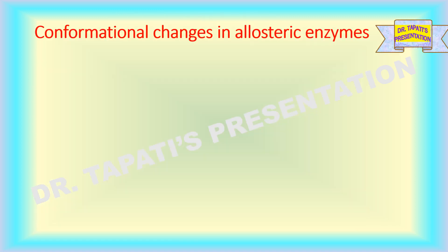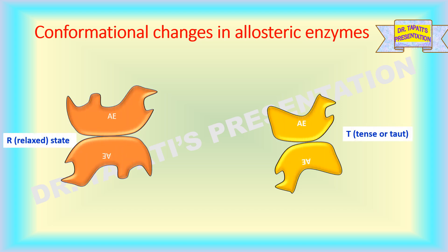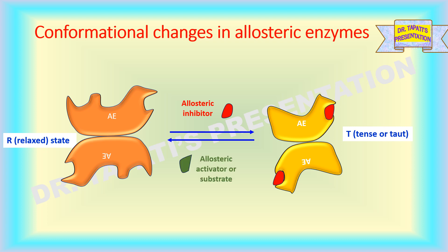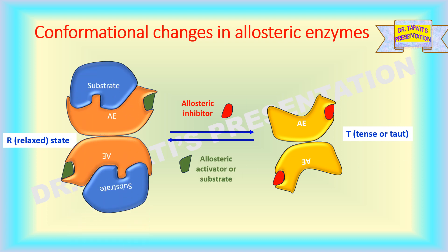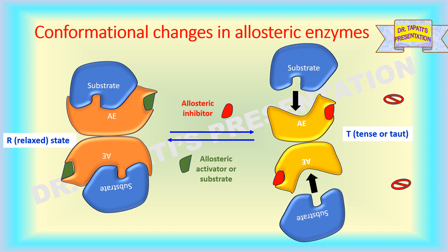Most of the allosteric enzymes are oligomeric in nature. The subunits are identical or different. They exist in two conformational states: R or relaxed state, and T or tense state. T and R states are in equilibrium. Allosteric inhibitors favor the T state, whereas activators and substrates favor the R state. The substrate cannot bind with the T form of the enzyme.